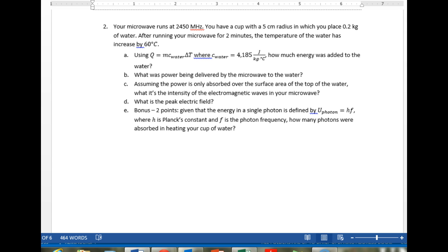So the first question is, how much energy was added to the water? The energy added to the water is just all the heat, Q. The equation's right there. Mass of the water is 0.2 kilos. The specific heat of water is 4185 joules per kilogram degrees C. And delta T is 60 degrees C.